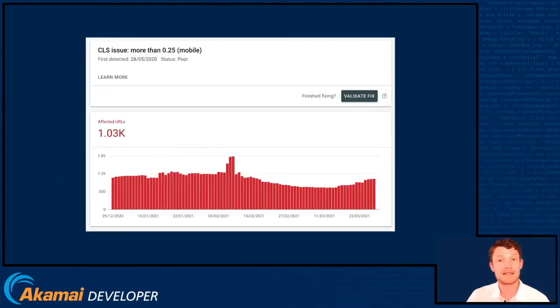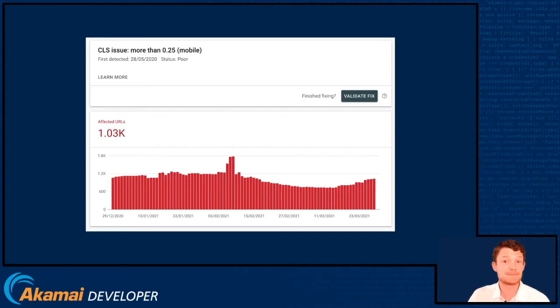You can also get this data — another view of the same information — in Google Search Console. It'll tell you how many of your URLs are failing the CLS assessment for Core Web Vitals.